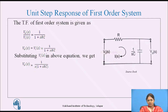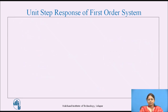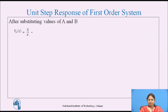Using the partial fraction method, this equation is rewritten as A/s + B/(1 + s·RC). Solving the fractions, we get A = 1 and B = −RC. Substituting the values of A and B in the output response, we get V_O(s) = 1/s − RC/(1 + s·RC). Taking RC to the denominator, the equation is rewritten as 1/s − 1/(s + 1/RC).